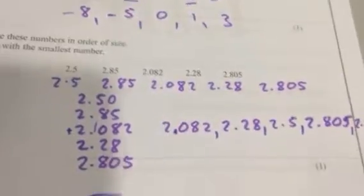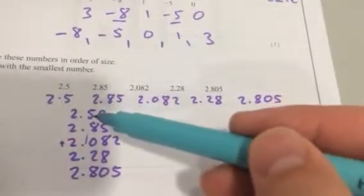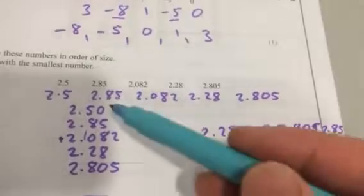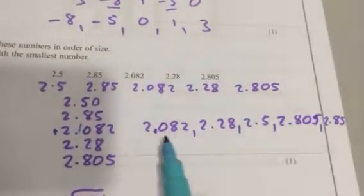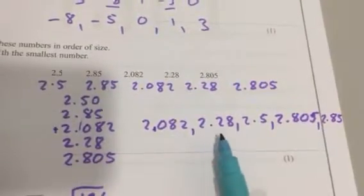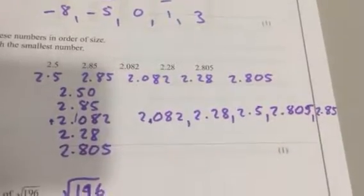Okay, so for some people they can see that straight away, but if you're not sure, list them vertically, add zeros if you need to. And I should be right, that's 2.082, 2.28, 2.5, 2.805, and 2.85.